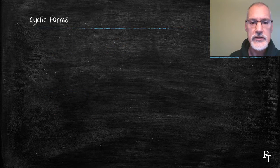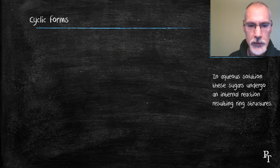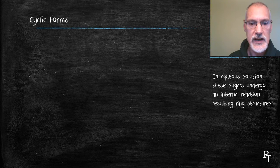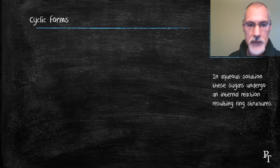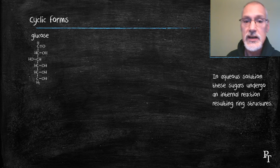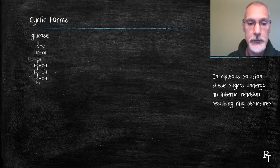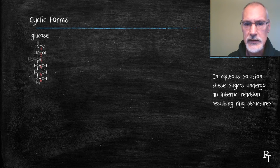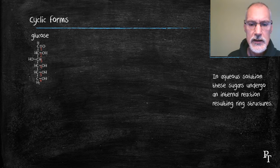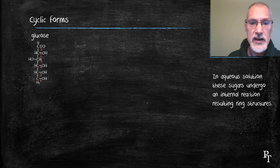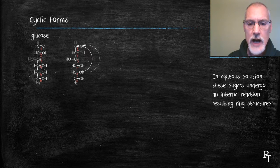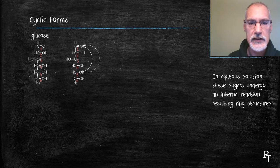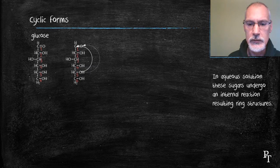Now monosaccharides don't tend to exist in the linear form when they're placed in water. They tend to react within themselves to create cyclic structures. Let's follow one through. I'm beginning here with a molecule of glucose. I'm going to number the carbons so we can follow the path a little bit more clearly. The internal rearrangement begins at carbon number five, where the oxygen will now bond with carbon number one, and the hydrogen will bond with the aldehyde group that's at the end of the molecule.